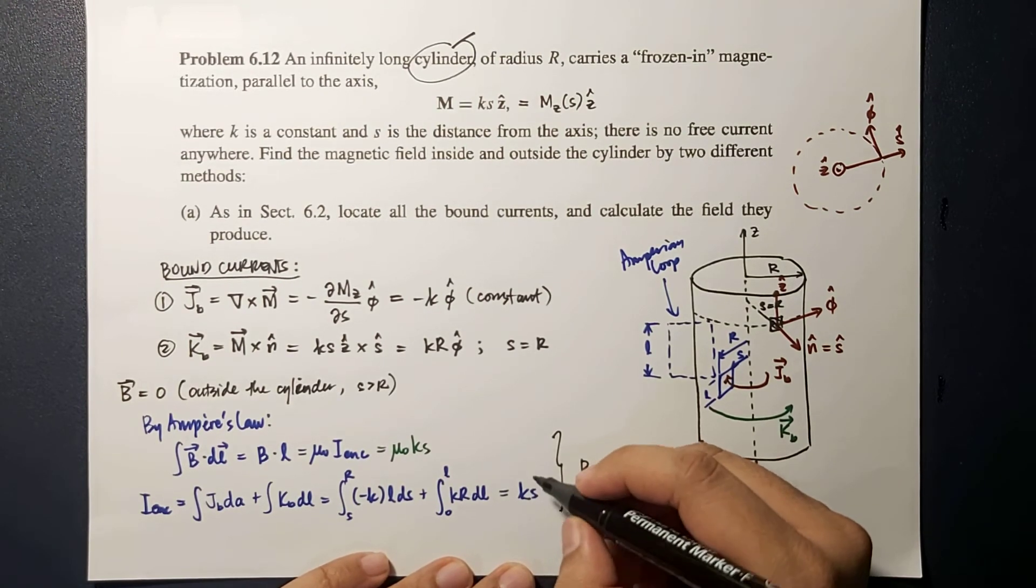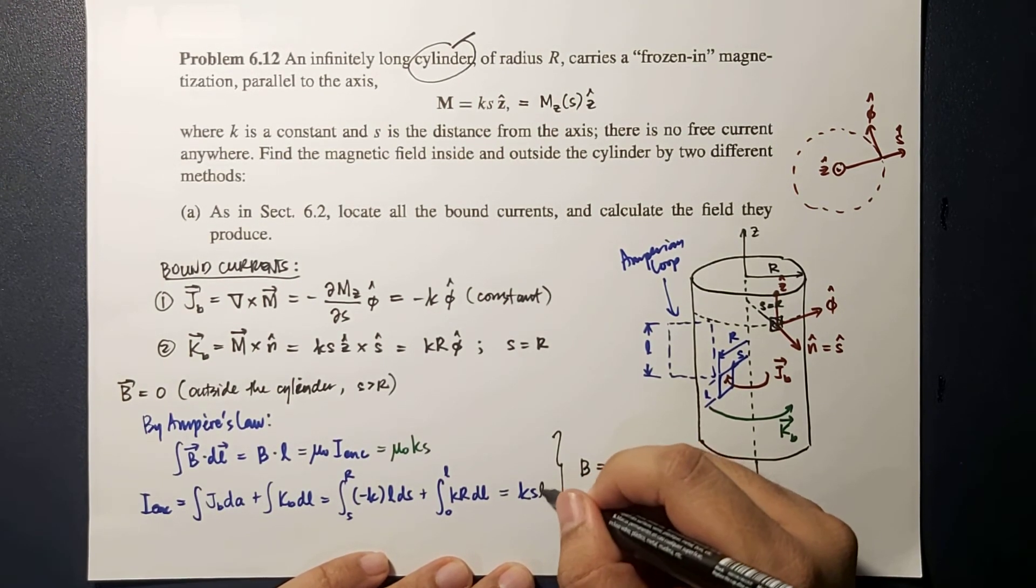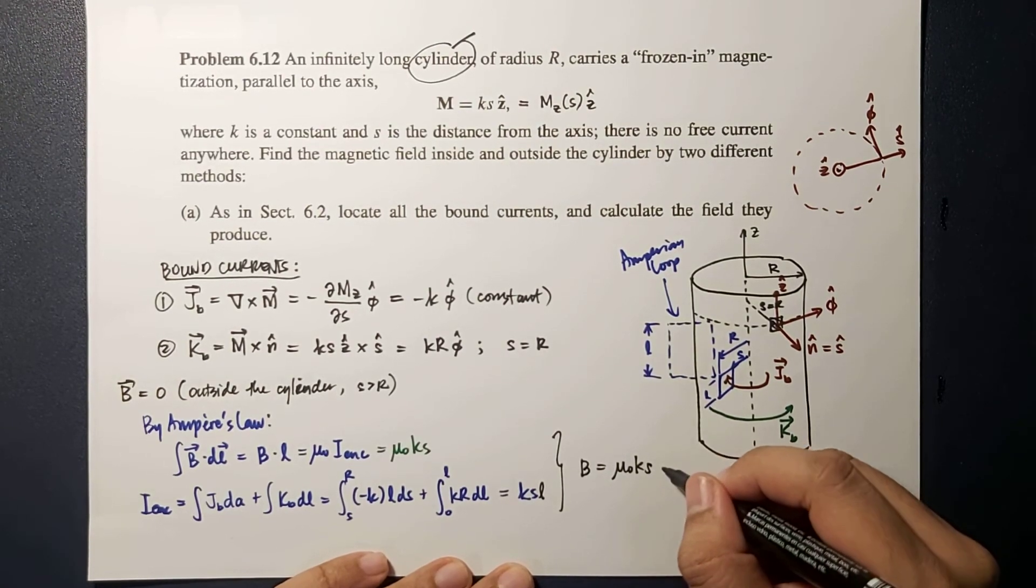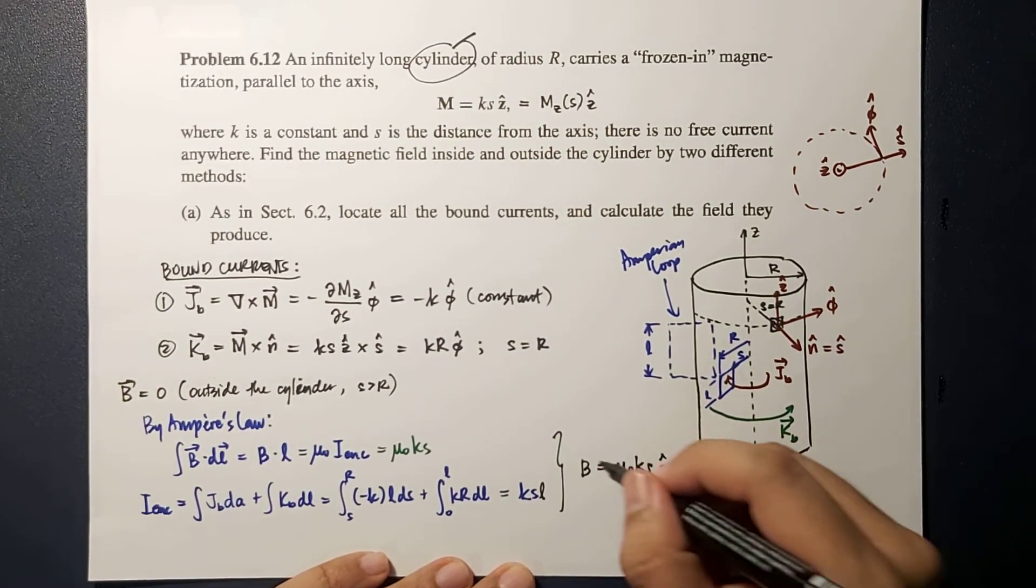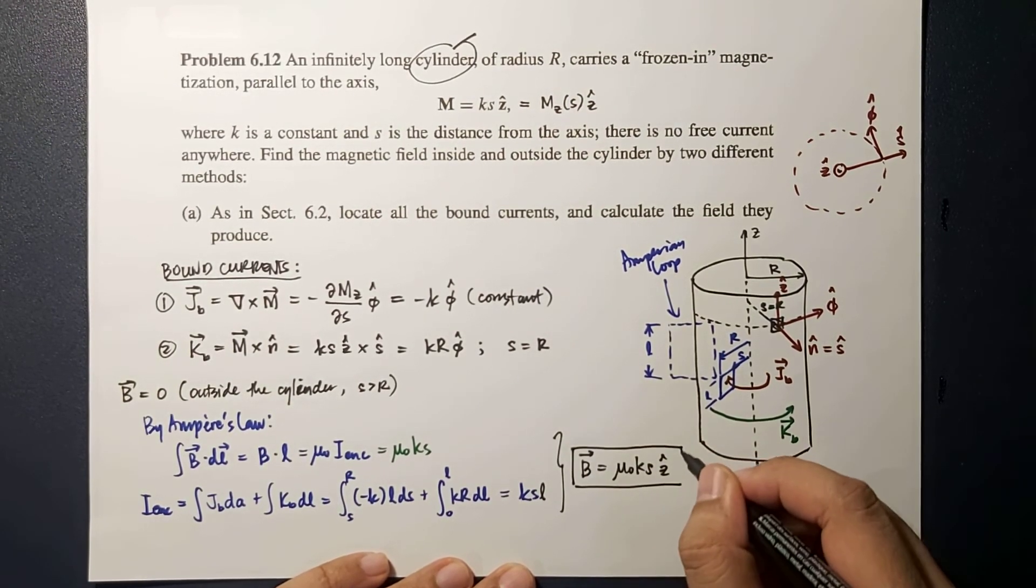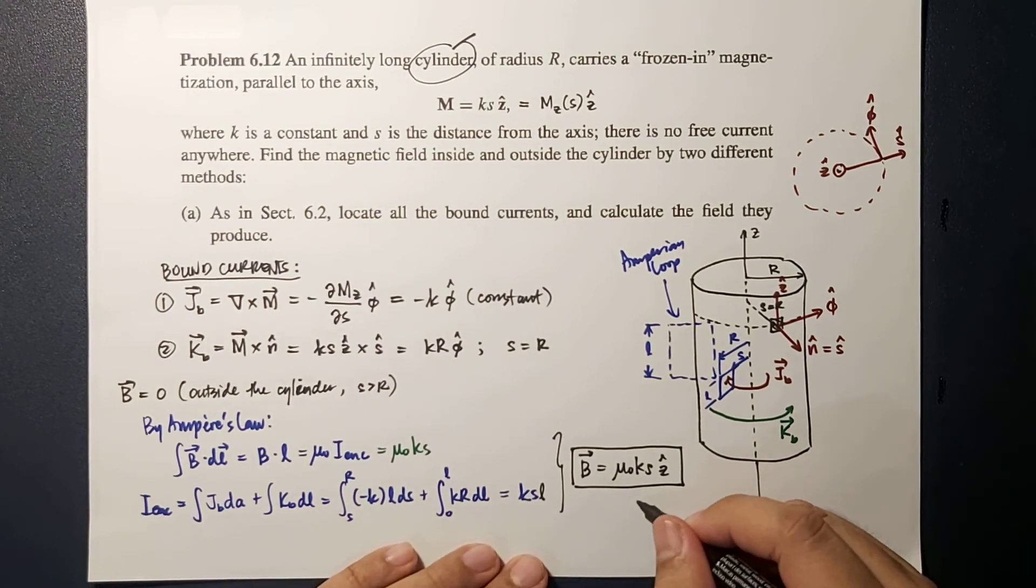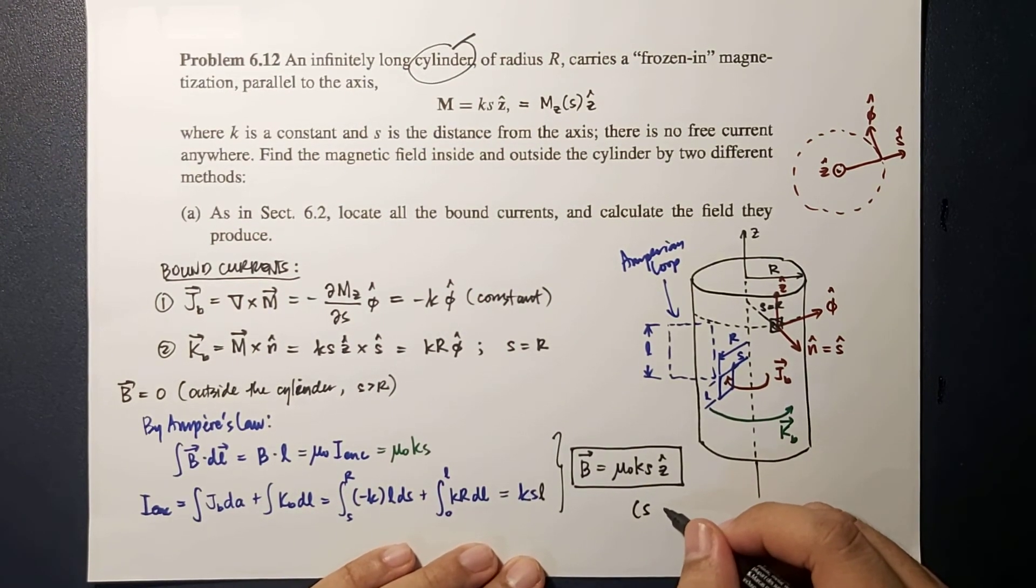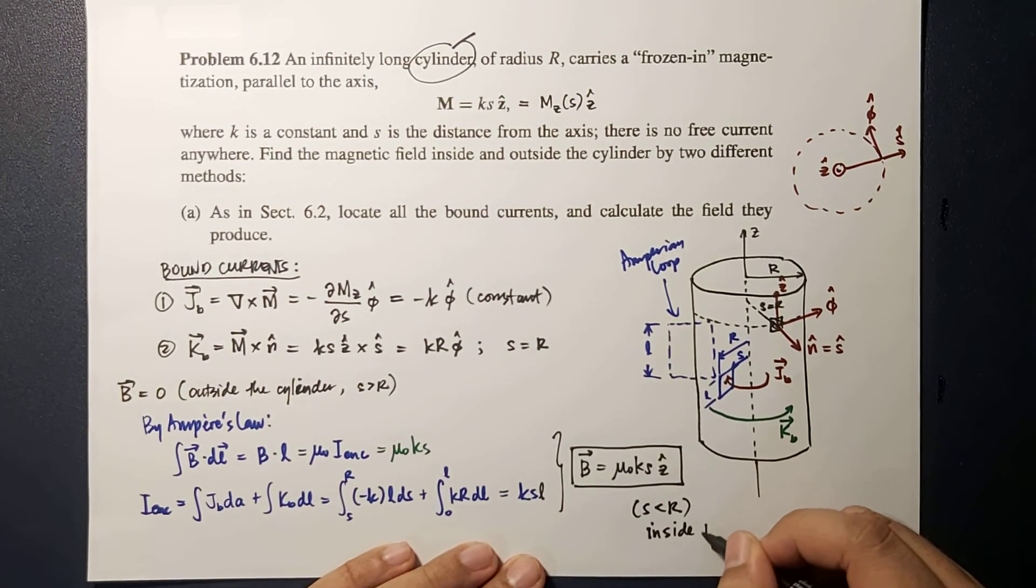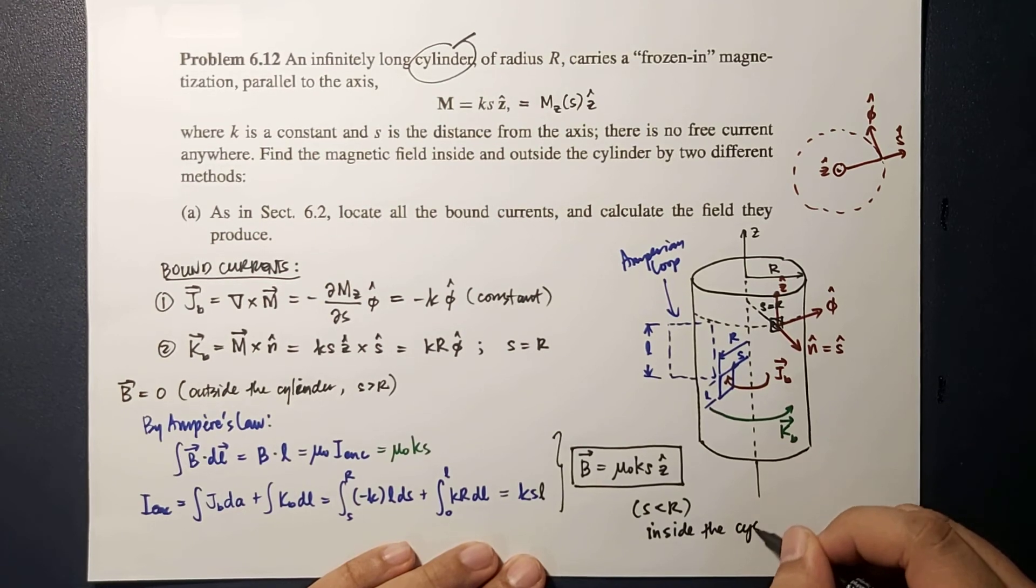And the resulting magnetic field would now be equal to μ₀ Ks in the Z hat direction for S less than R or inside the cylinder.